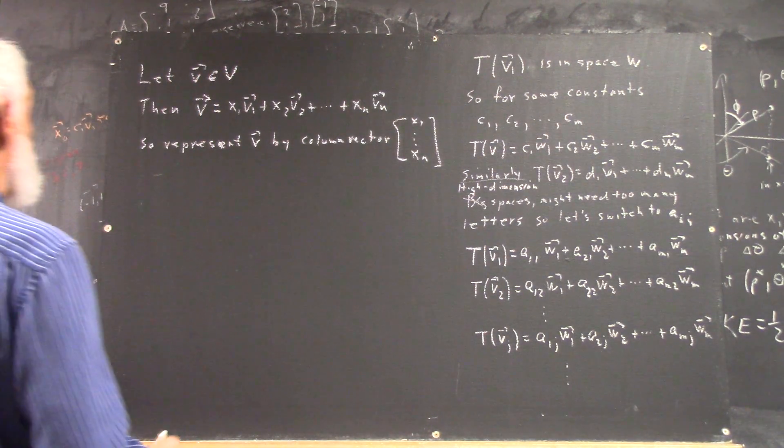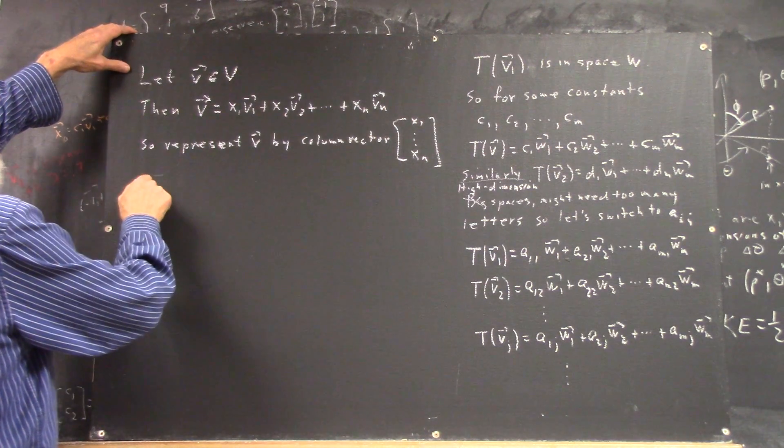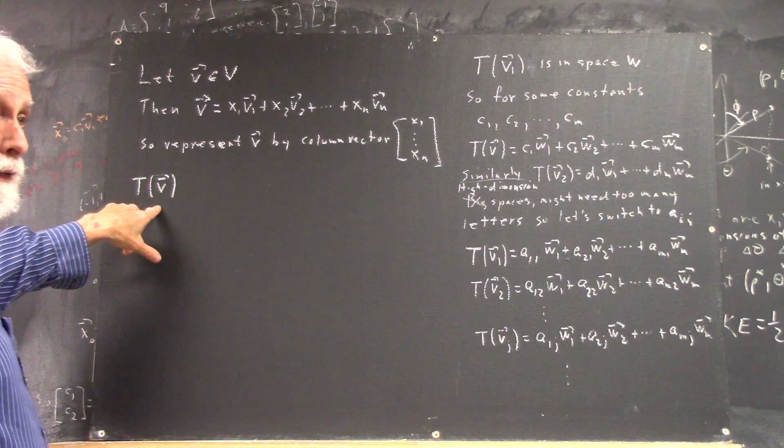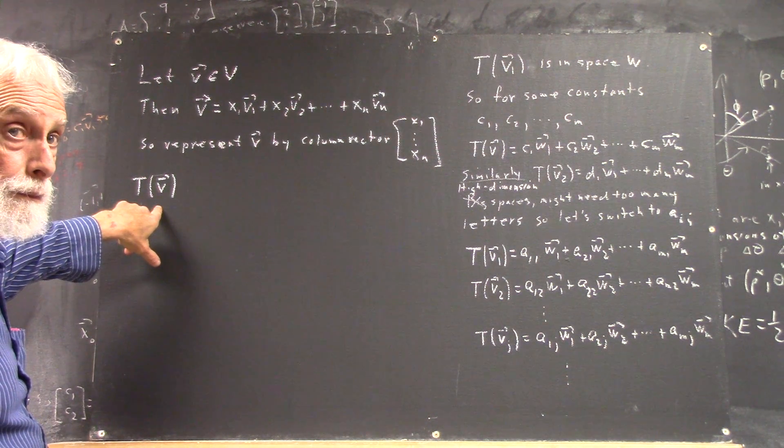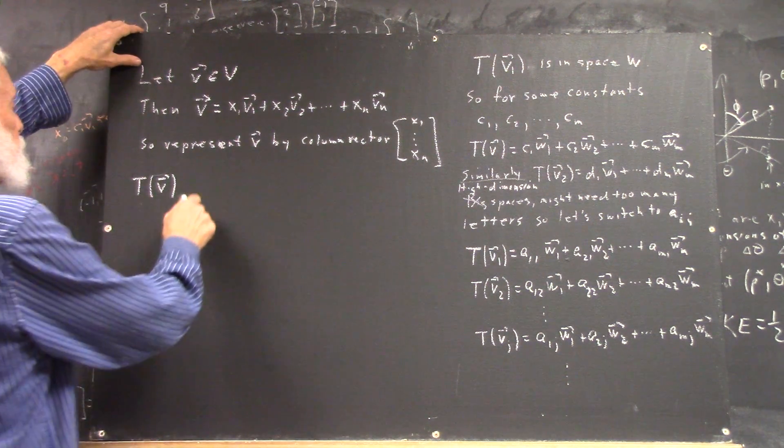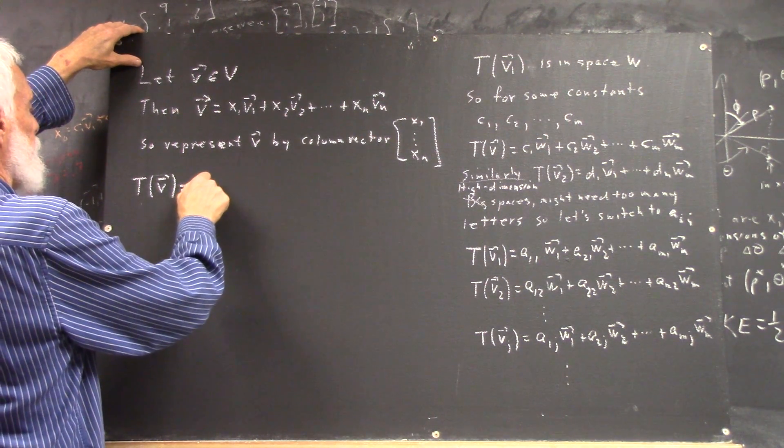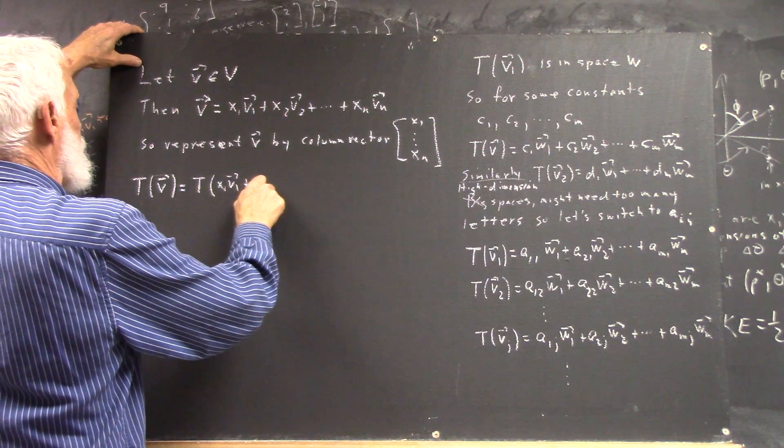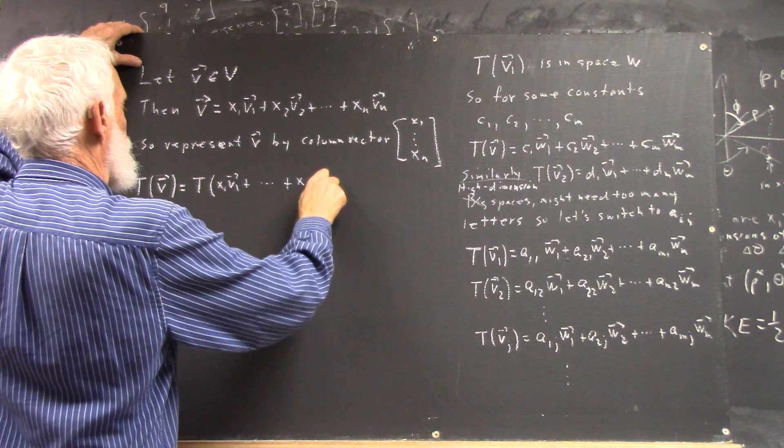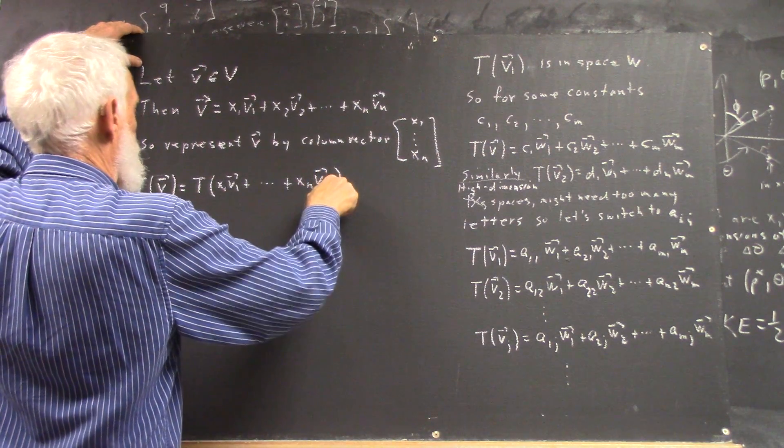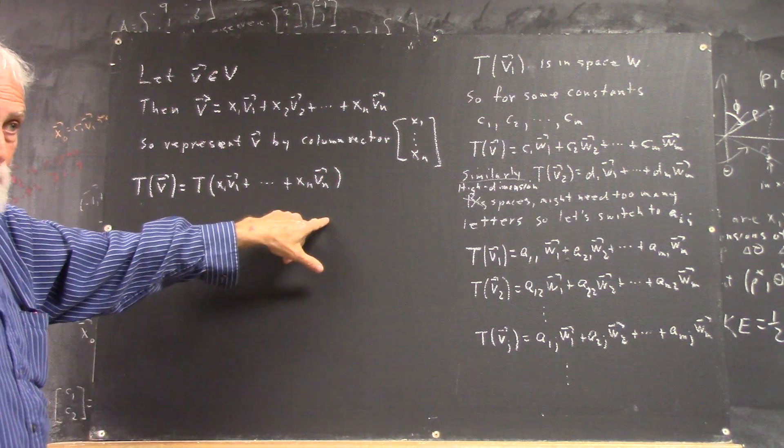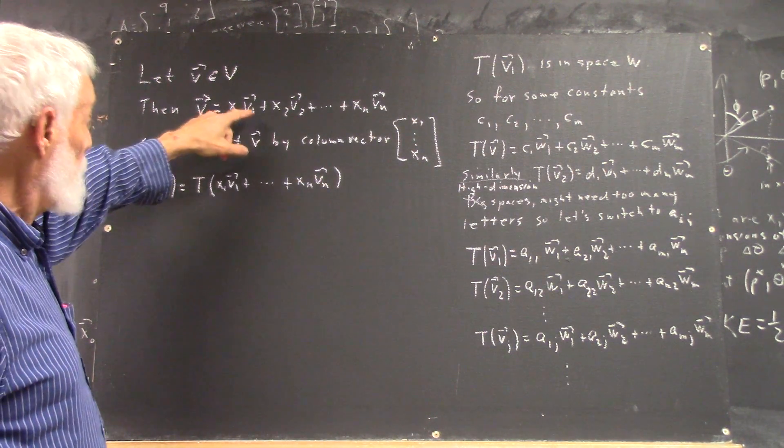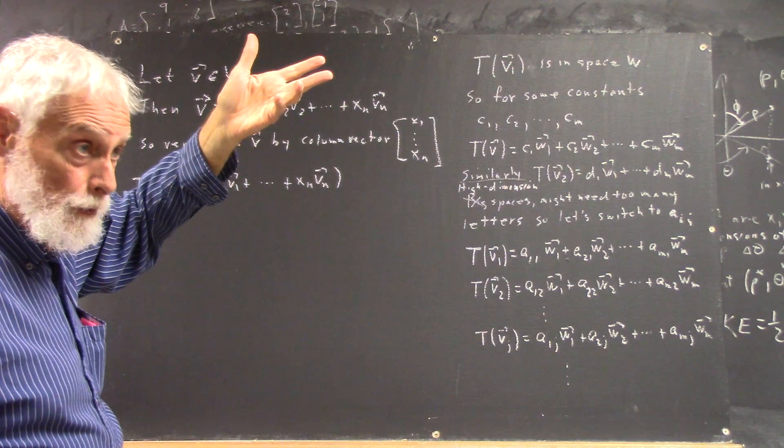Okay, well, what is our transformation of the vector v? Well, let's see, is T applied to this representation of the vector v? Now this representation depends on what the v1 through the vn are, okay?